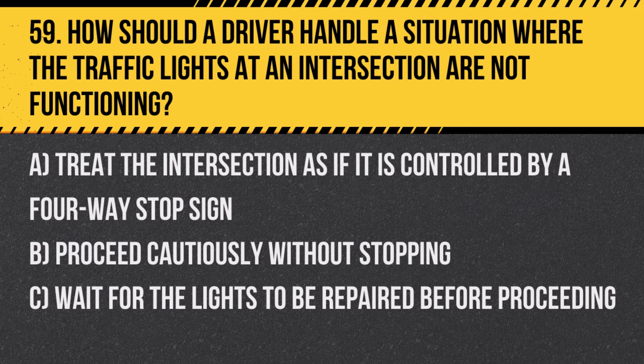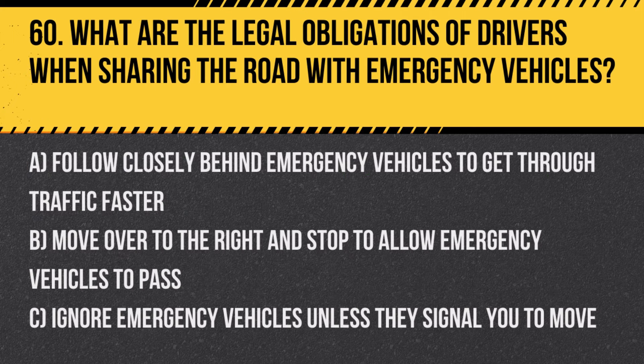Question 59: How should a driver handle a situation where the traffic lights at an intersection are not functioning? A. Treat the intersection as if it is controlled by a four-way stop sign. B. Proceed cautiously without stopping. C. Wait for the lights to be repaired before proceeding. Answer: A. Treat the intersection as if it is controlled by a four-way stop sign. This approach ensures all drivers proceed safely and predictably.